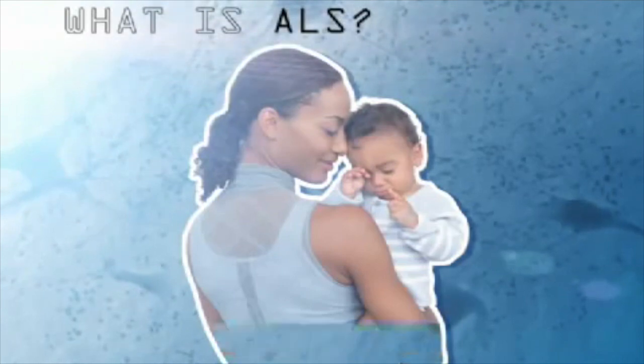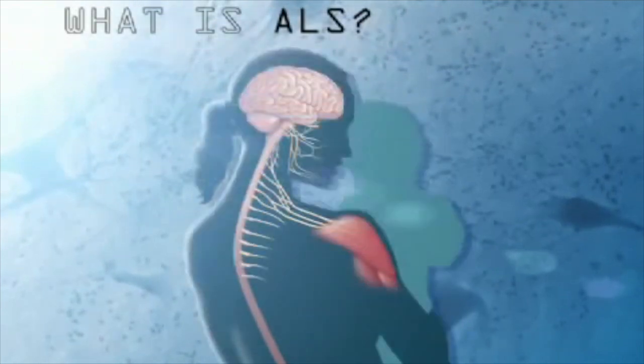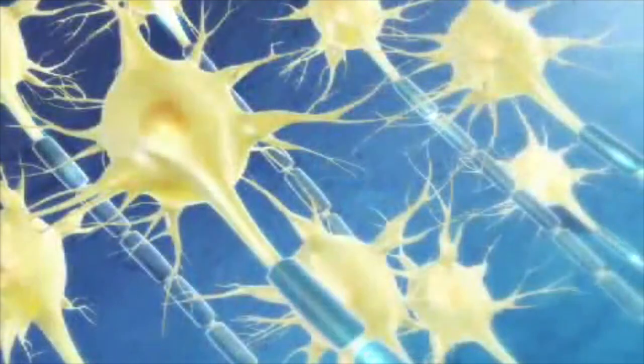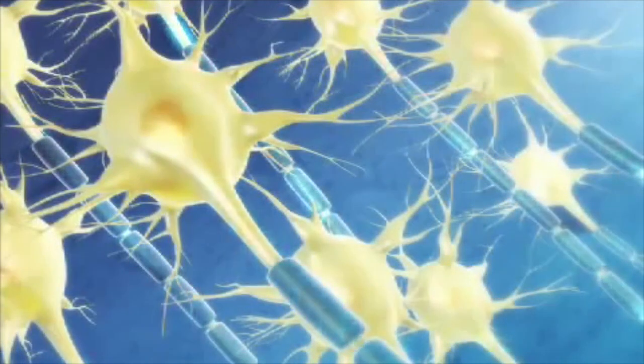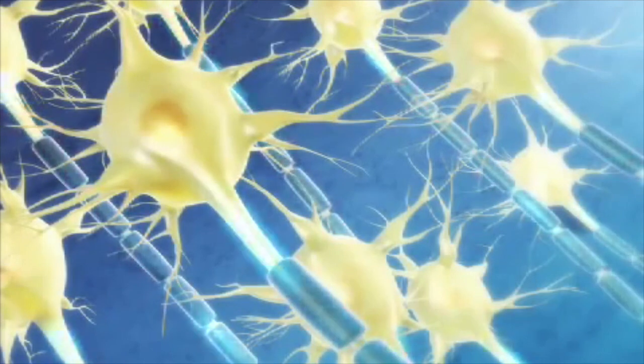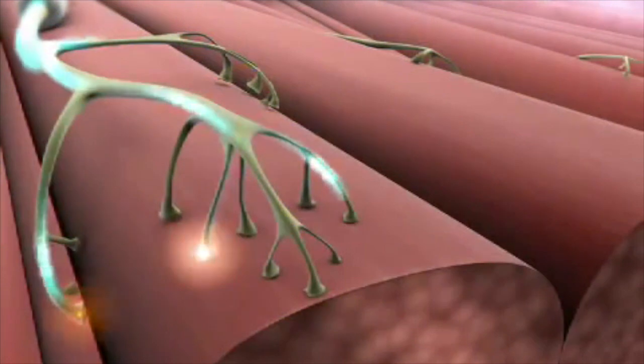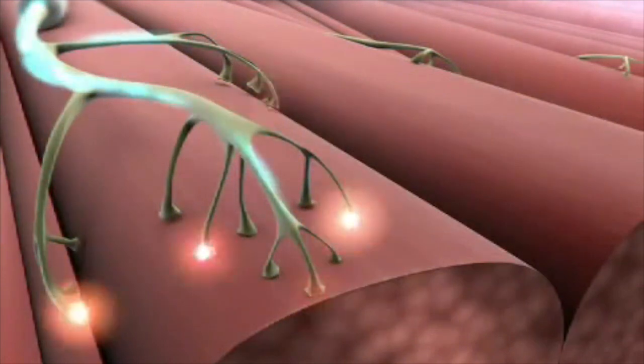Whereas cancer involves the uncontrollable growth of cells, ALS is characterized by destruction of cells in the spine and brain called motor neurons. Motor neurons control virtually every human movement, from walking and talking to swallowing and breathing.